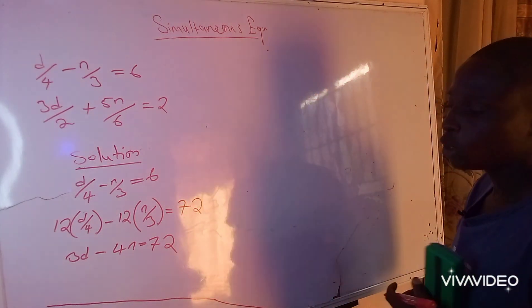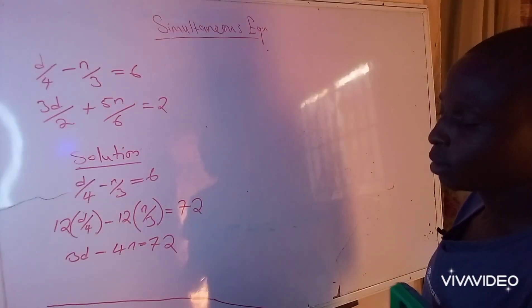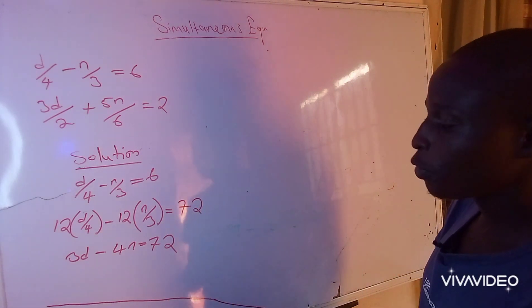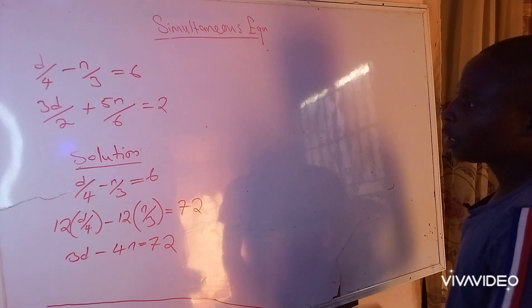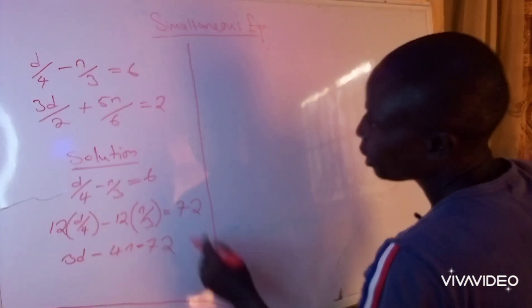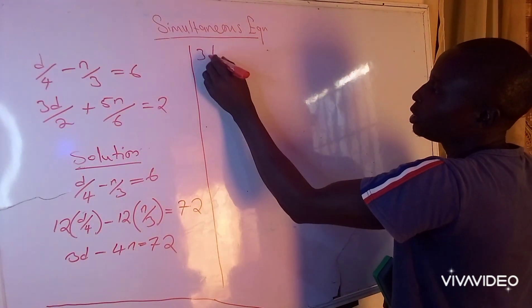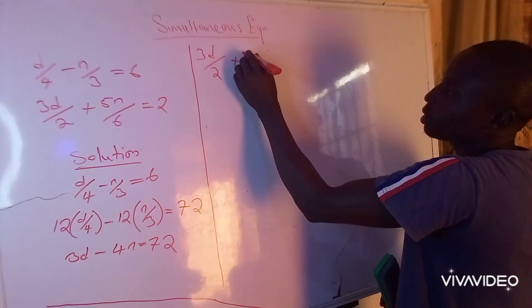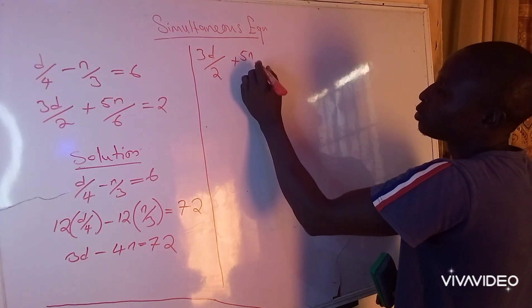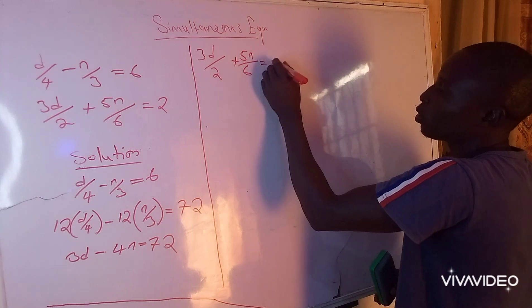Then let me draw a line and pick the second equation and simplify it also. 3d over 2 plus 5n over 6 equals 2.